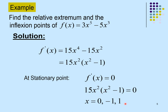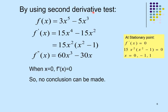For x = −1, substitute into f(x) to get y = 2. So the point (−1, 2) is a relative maximum. For x = 1, substituting into f''(x) gives 30, which is greater than 0, indicating a relative minimum. Substituting x = 1 into f(x) gives y = −2, so (1, −2) is the relative minimum.